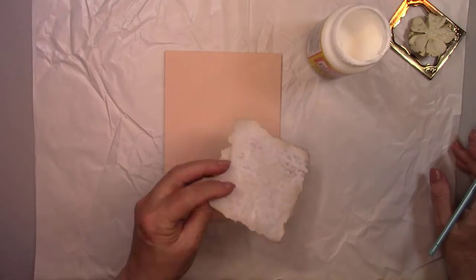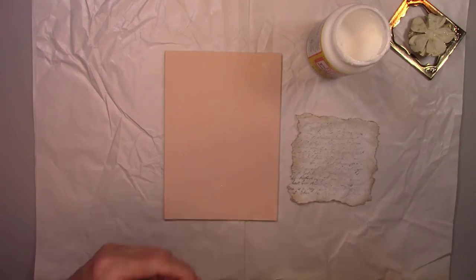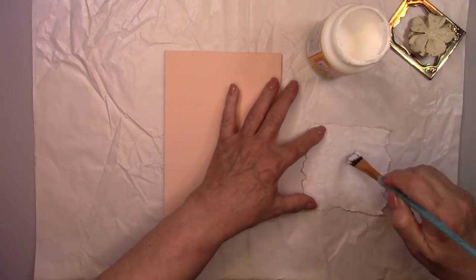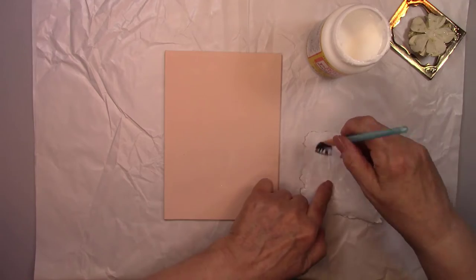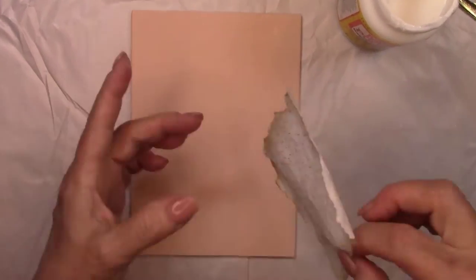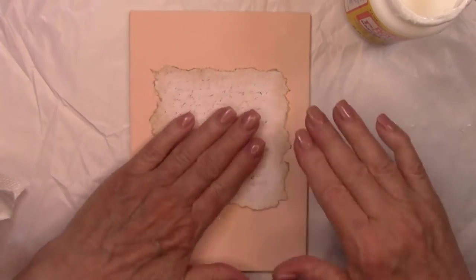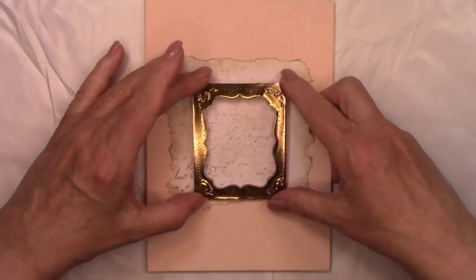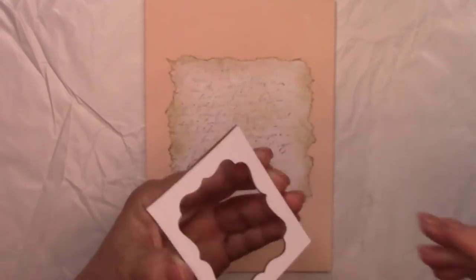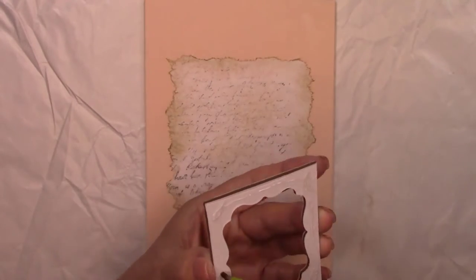Although this is not really a project video, I'm going to quickly show you a little something you can do with your new old paper. I painted a small canvas peach, and now I'm gluing the parchment paper on the canvas with some Mod Podge. Now I'm gluing a cute little Tim Holtz frame that I got at Hobby Lobby.